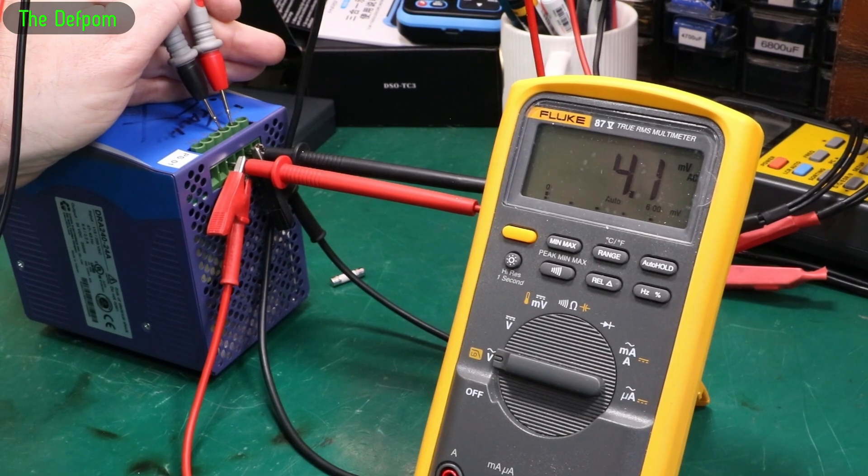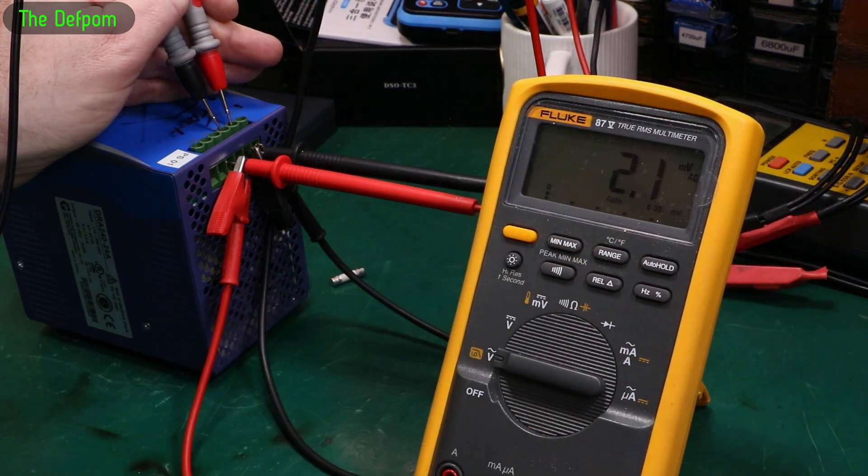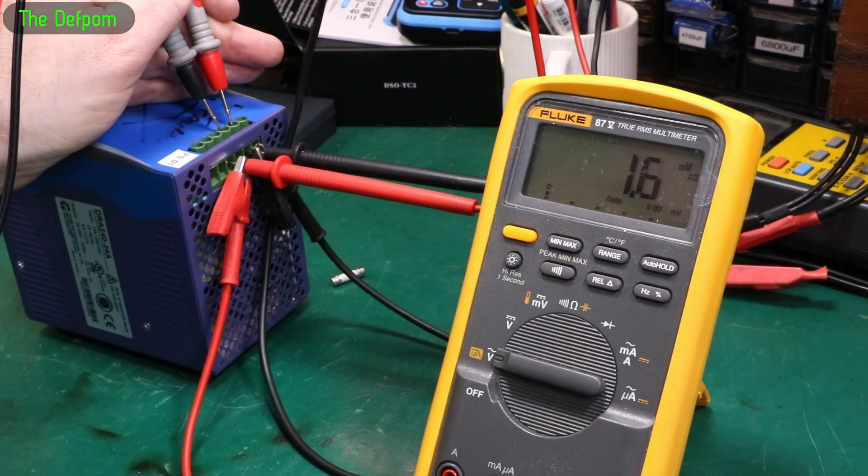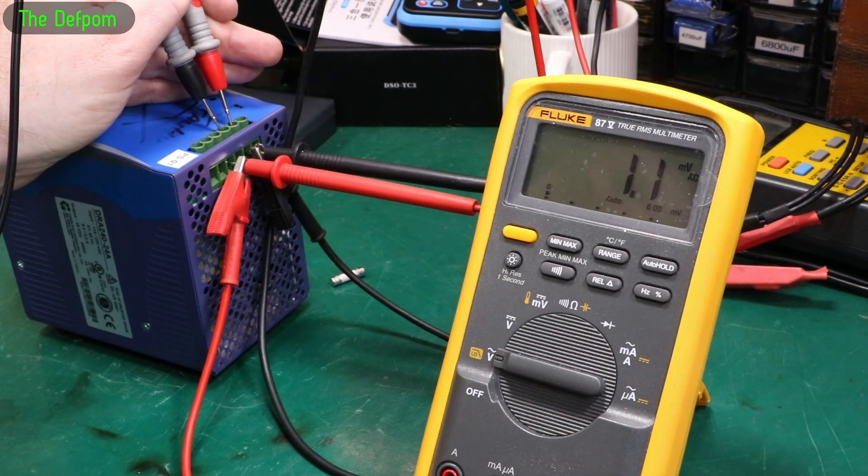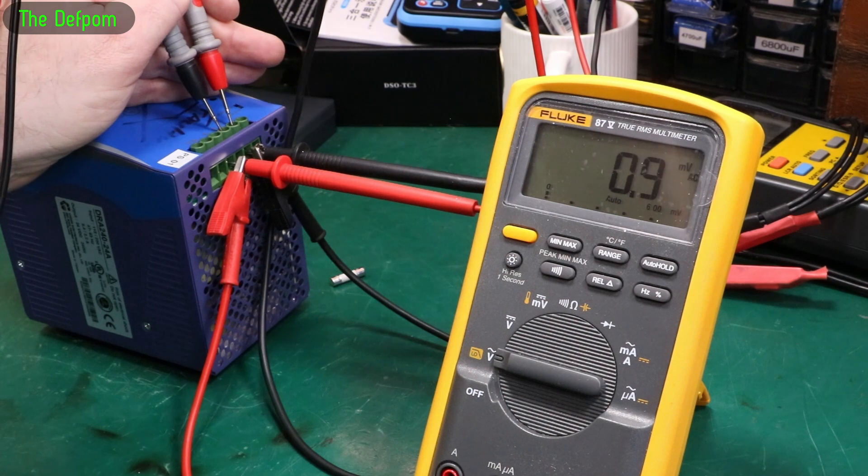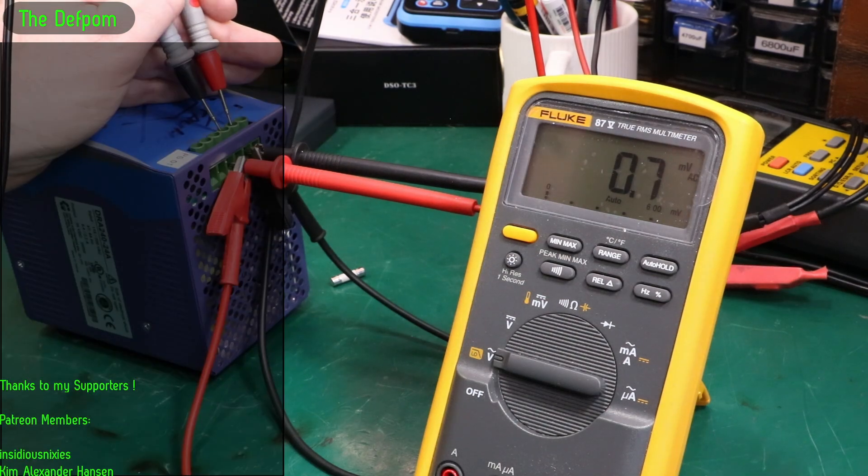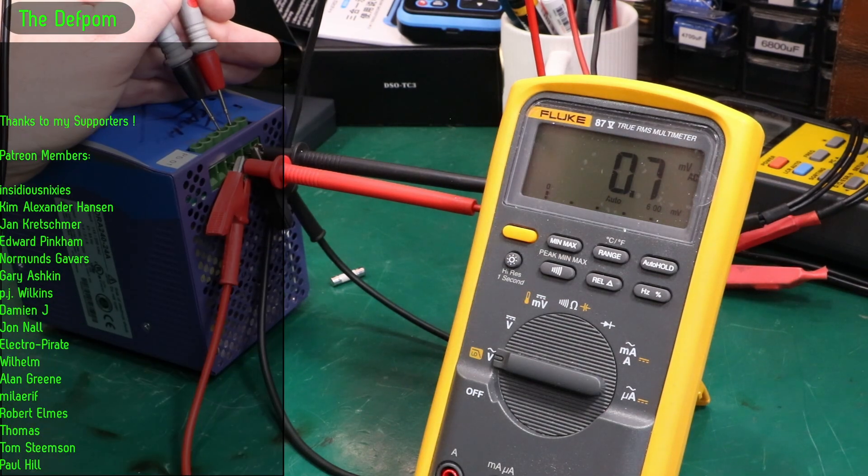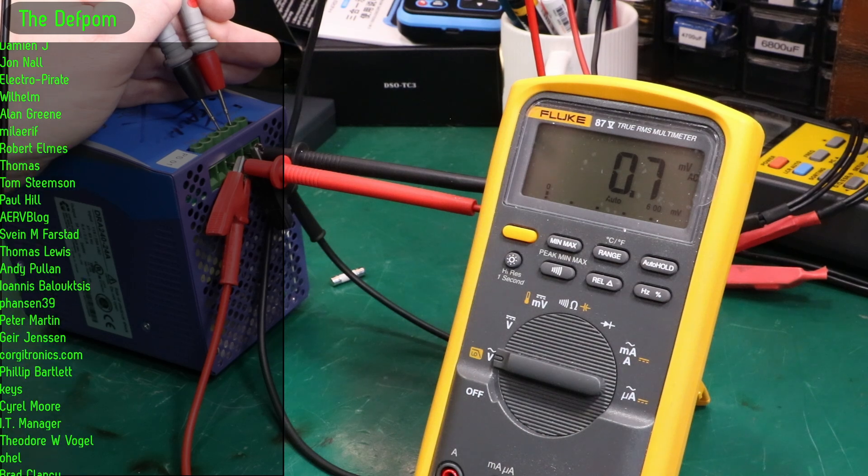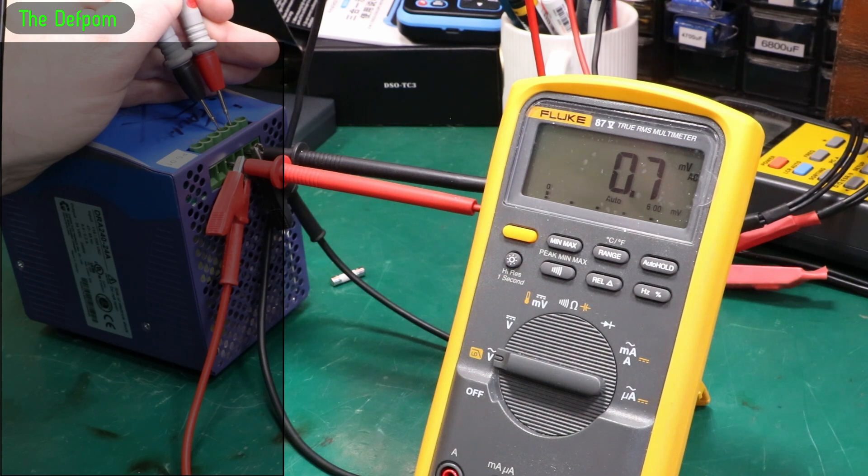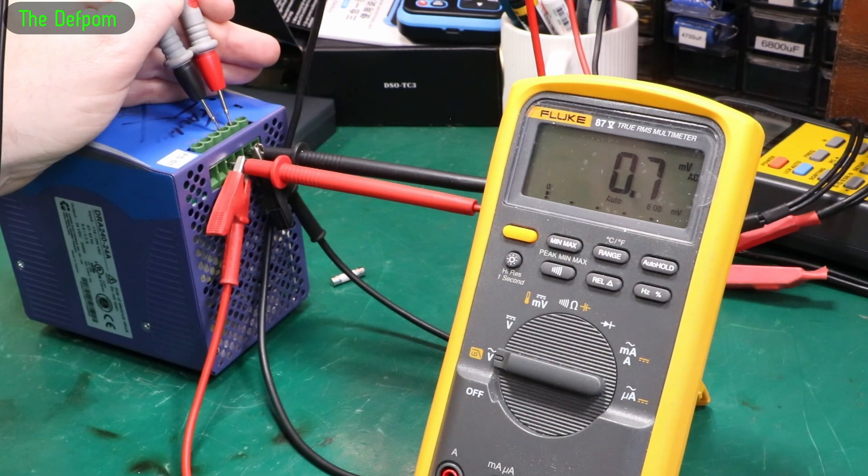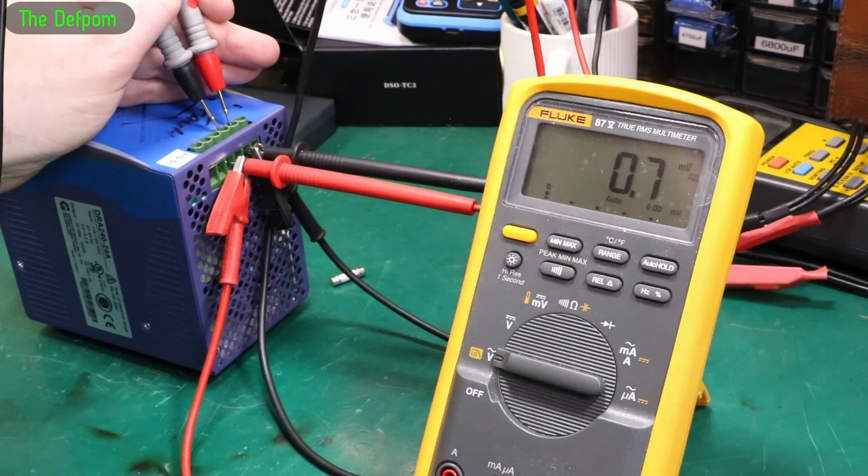So just checking for ripple. This will initially jump around a bit and then stabilize when I first connect it. This is what this meter is, it's got like a buffer, I suppose, on it. So that's fine. That's at 1 amp. 2 amps. 3 amps. 4. 5. 6. 8 amps. 10 amps. No ripple even at 10 amps. Look at that. Nothing wrong with that, that's absolutely fine. That power supply is fine.